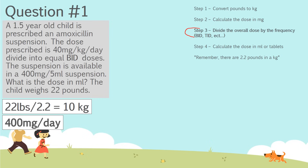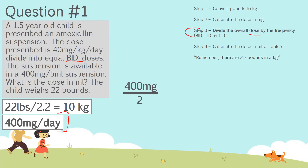Now we're on step three. We've calculated how much the patient gets per day, but now we have to calculate how much they get per dose. The dose is divided into equal bid doses — bid means twice a day. So we take 400 divided by 2, which gives us 200 milligrams per dose.